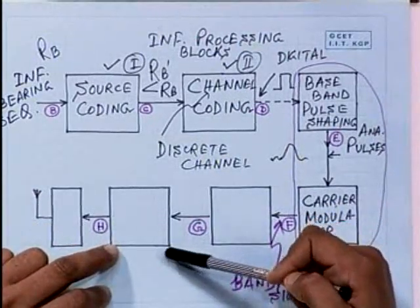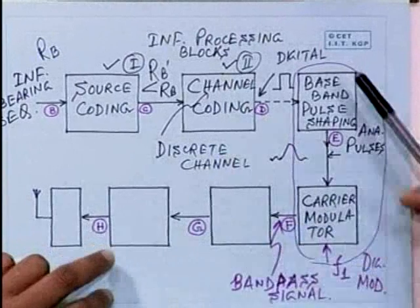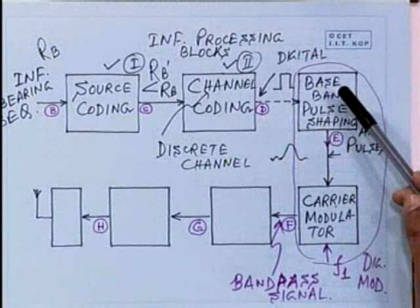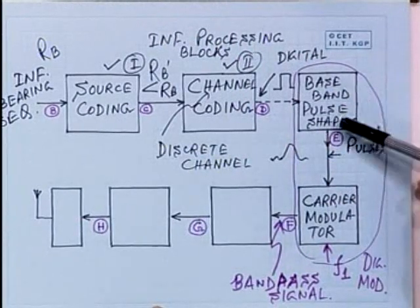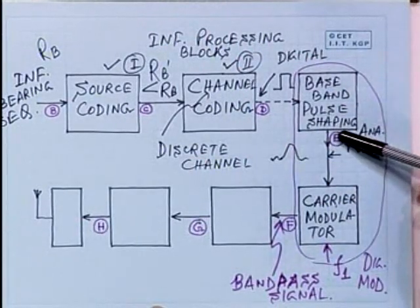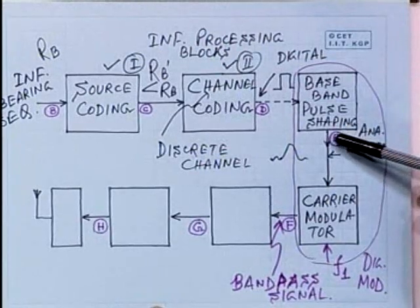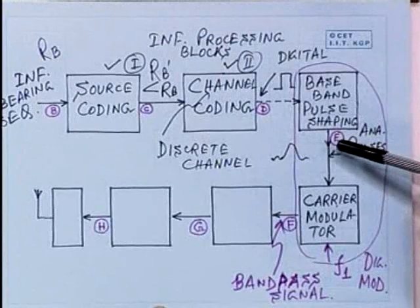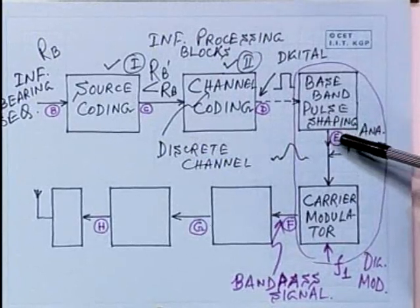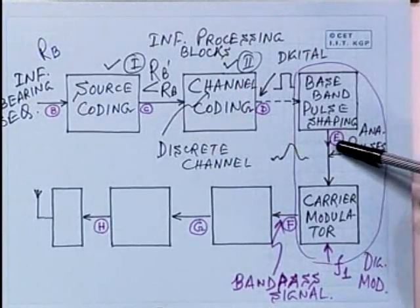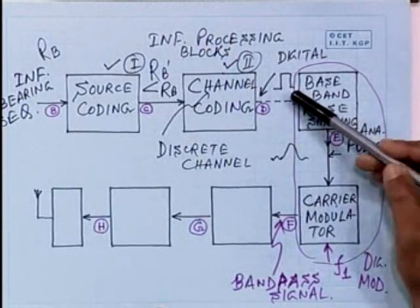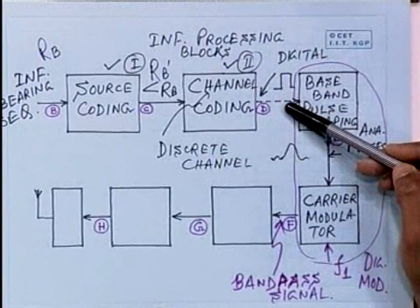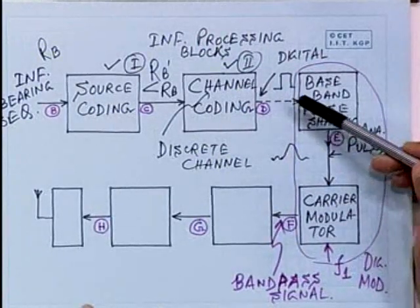The next block was the channel coding block, whose purpose was to take care of or take some preventive action against any possible problems or impairments downstream, which includes the physical channel and may also include some imperfections or lax design in some modules in the transmitter and receiver. We will have some occasions to discuss these issues in more detail. The channel coder output should go to a block we named as a baseband pulse shaping unit, whose primary purpose is to generate analog pulse waveforms or pulse streams without compromising the information in the input bit stream, which may be binary or non-binary.